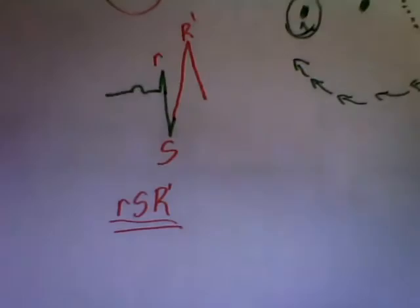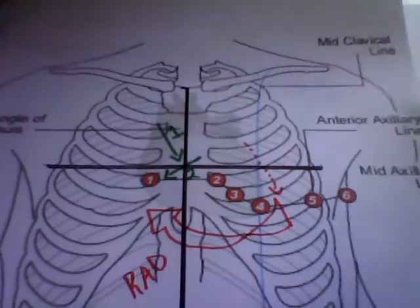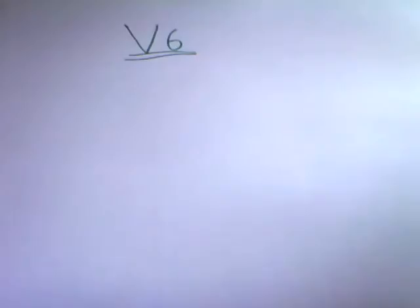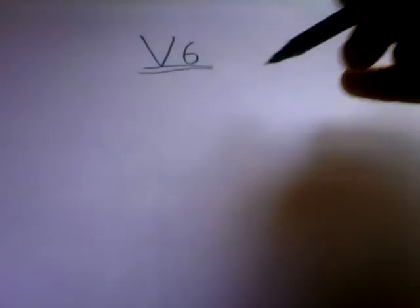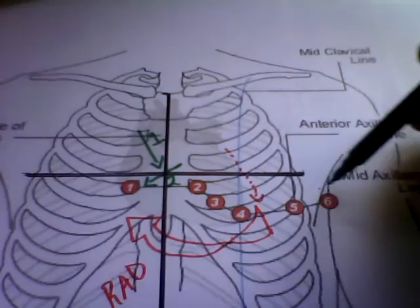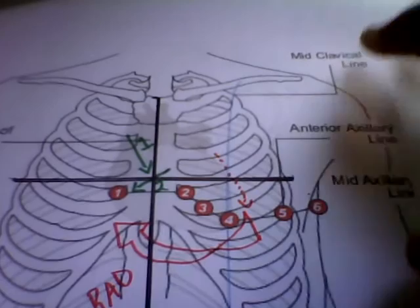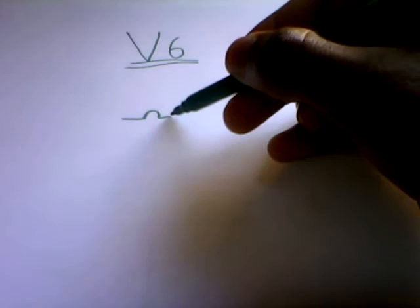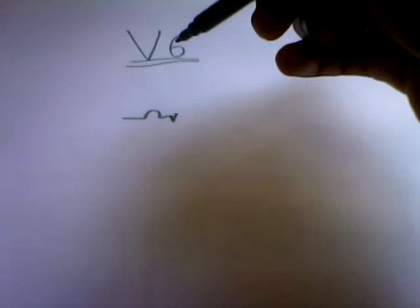Now let us look at what happens in lead V6. Remember I said the key leads are V1 and V6. So in V6, you can see that as well - vector one is still normal so that's not affected, so we get our P wave. Vector 2 is moving away from V6, there is our V6, there is our vector 2. Therefore, is it going to produce a small low amplitude R wave or a low amplitude Q wave? So it's definitely going to cause a low amplitude Q wave because it's moving away, therefore a negative deflection.